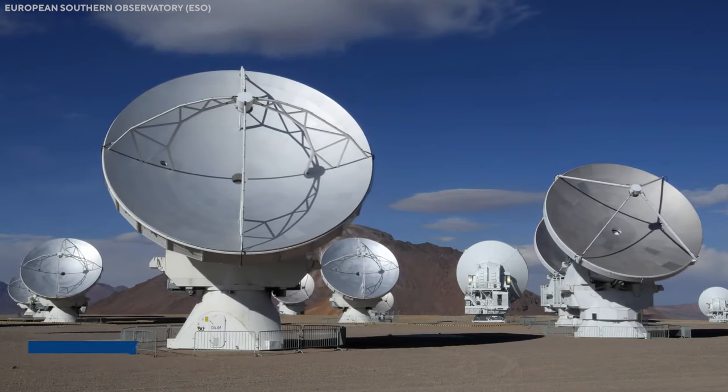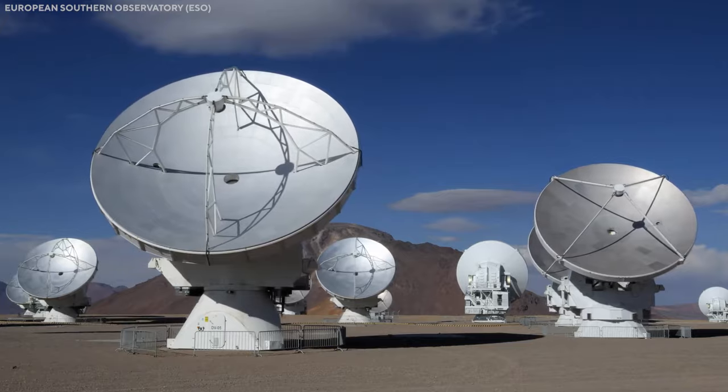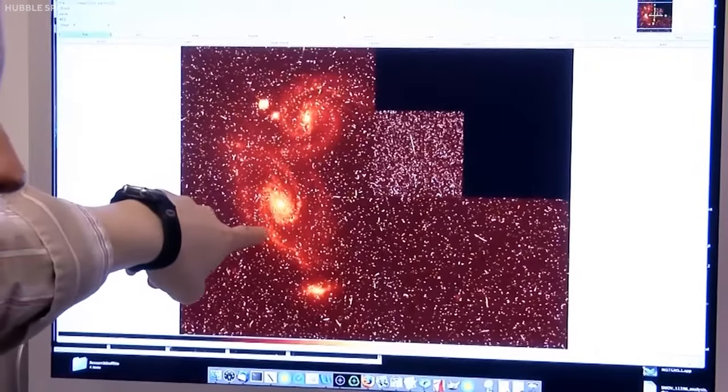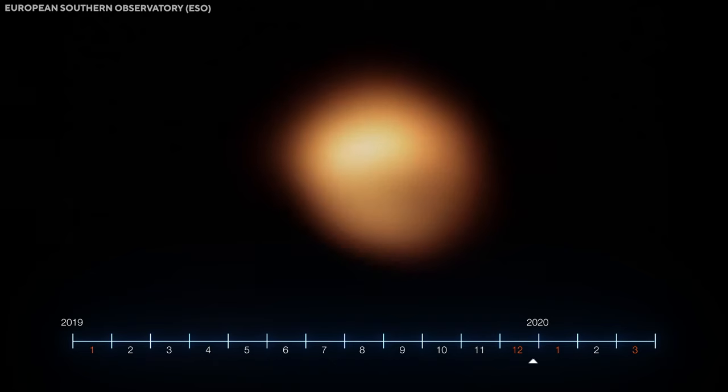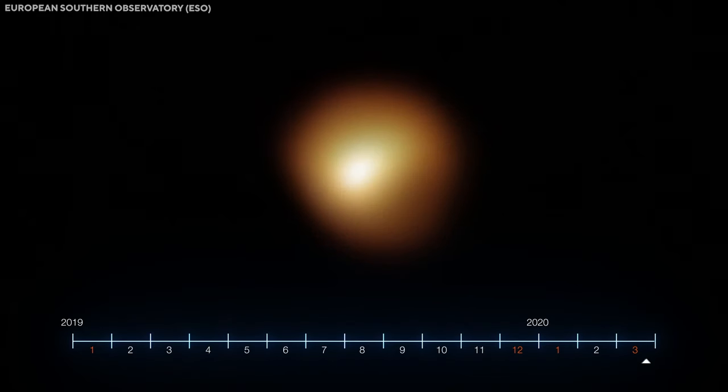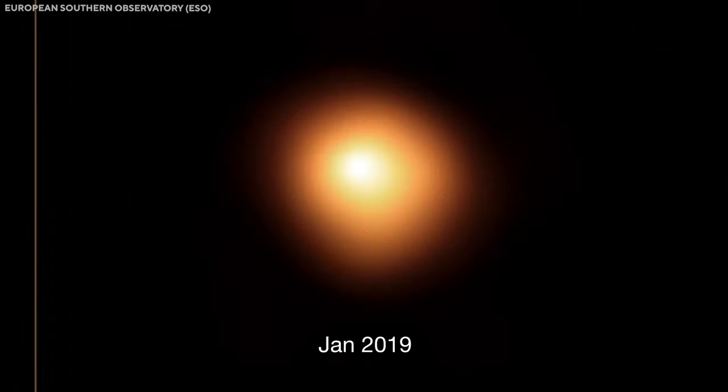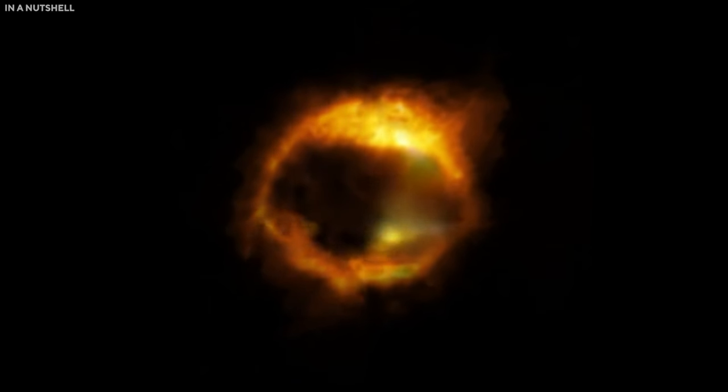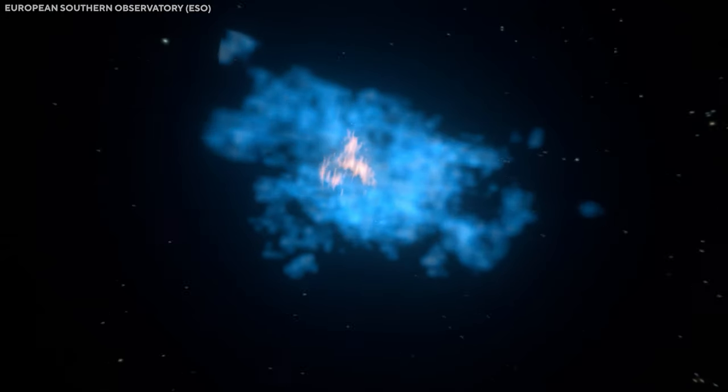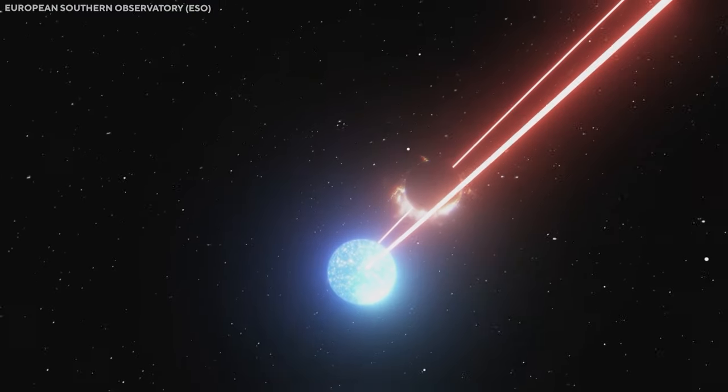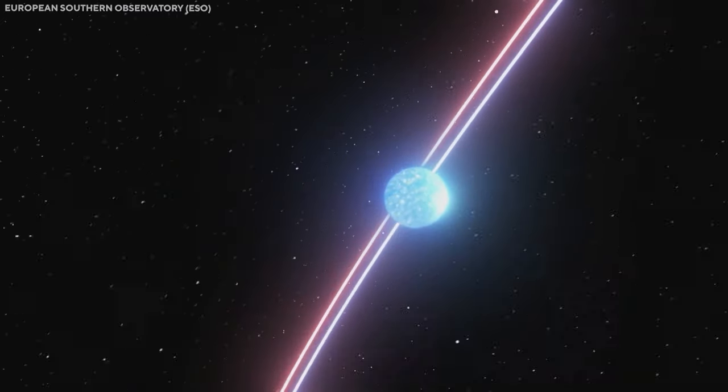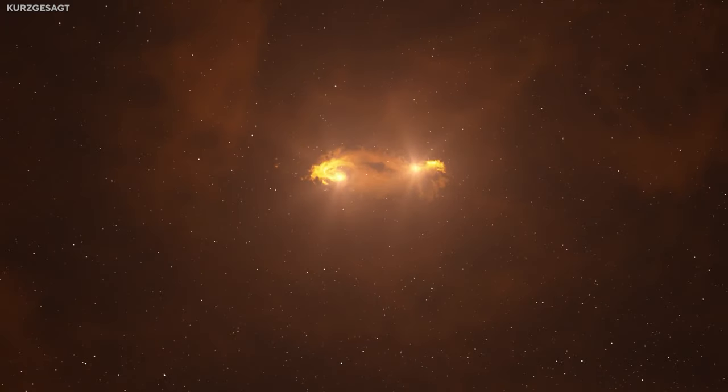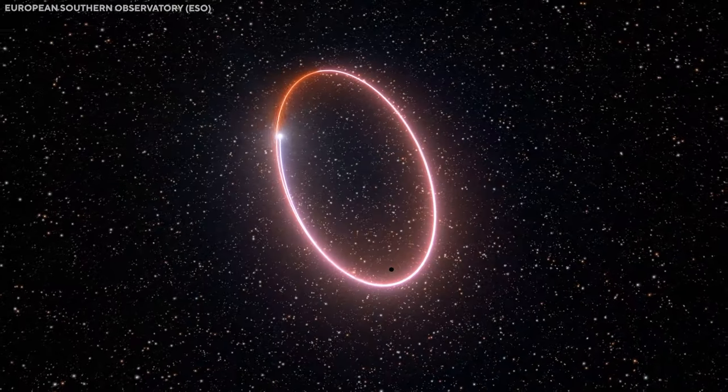By April 2023, astronomical observations indicated that Betelgeuse had returned to its customary luminosity levels, leading many to believe that the anomaly had ended. However, in a surprising twist, the star's brightness began escalating by an astonishing 50% in the following months. While pronounced fluctuations are common among variable stars, it was unexpected for a star like Betelgeuse, which had exhibited predominantly predictable luminosity cycles. This sudden surge in brightness thrust the star back into the limelight, sparking intense discussions about its immediate future.